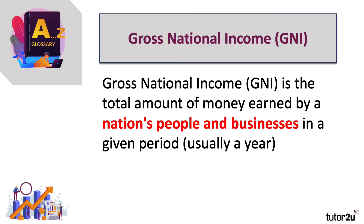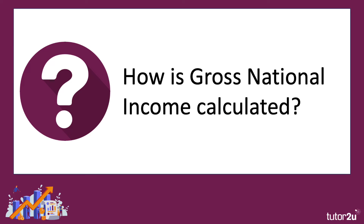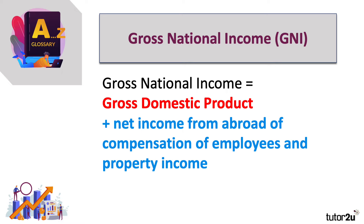Gross national income — how is it calculated? Essentially, it's very similar to GDP. Gross national income is gross domestic product plus the net income from overseas — the compensation or rewards to employees and property income.